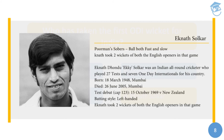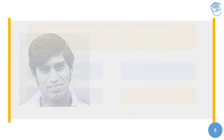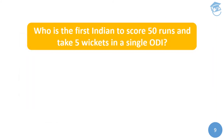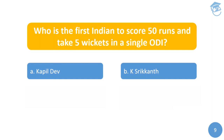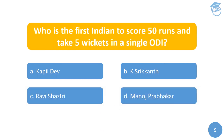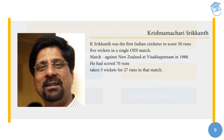The ninth question: Who is the first Indian to score 50 runs and take a five-wicket haul in a single ODI? Options are: Kapil Dev, Krish Srikkanth, Ravi Shastri, or Manoj Prabhakar. The answer is Krish Srikkanth. He was the first Indian cricketer to score 50 runs and take five wickets in a single ODI, achieving this feat against New Zealand at Visakhapatnam in 1988. He scored 70 runs and took five wickets for 27 runs in that match.